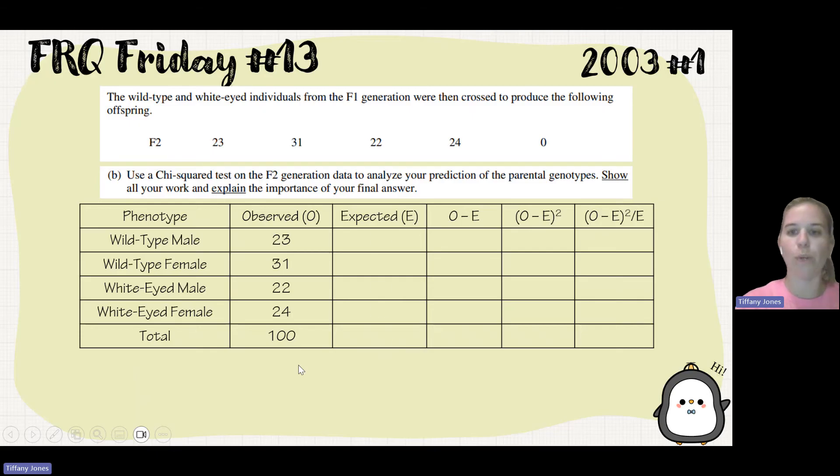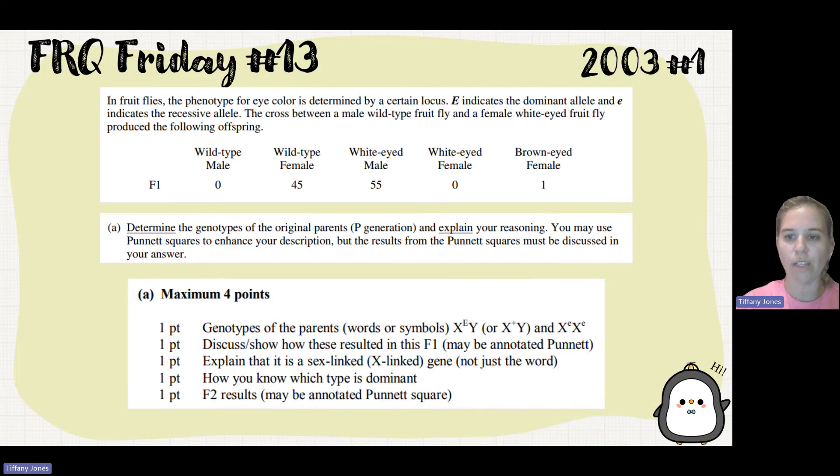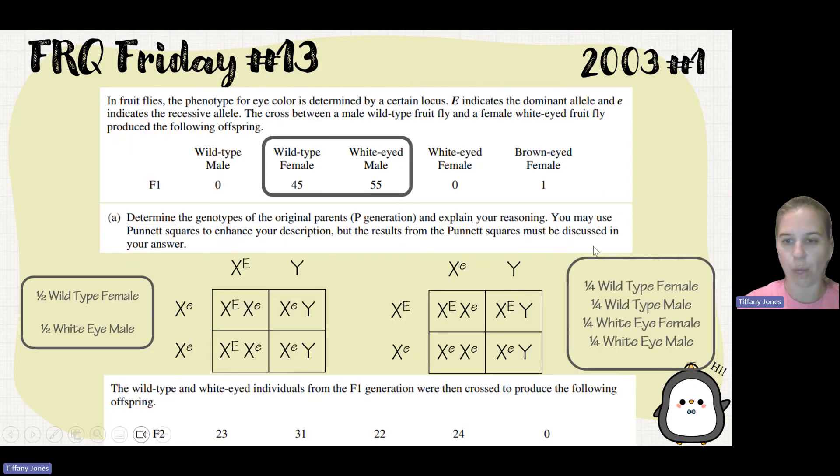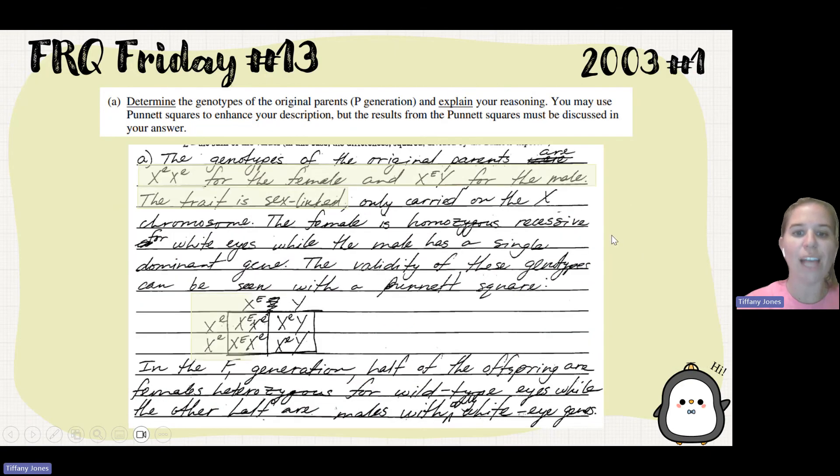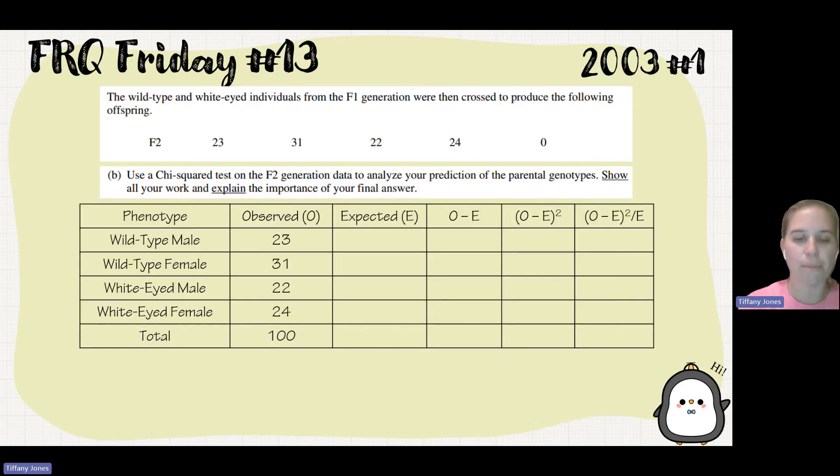So we want to go to our expected. When we did that cross, I ended up with a one-to-one-to-one-to-one ratio between all the different phenotypes. So that's what I would expect. I would expect one-fourth of each of these to be there. So I take 100, which is my total, and I multiply by one-fourth, and I will get 25 for all of these, which matches that one-to-one-to-one-to-one ratio that we saw in our Punnett square.